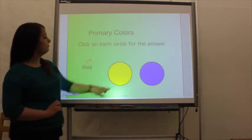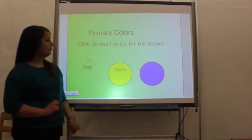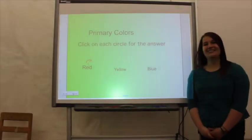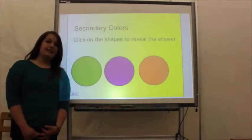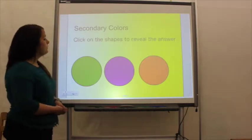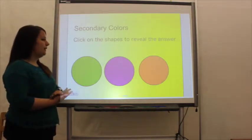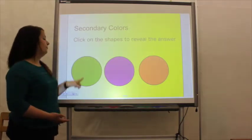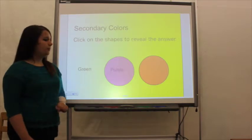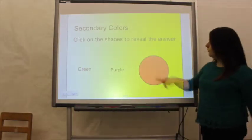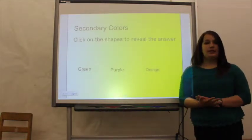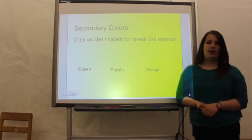We identify red, yellow, and blue as the primary colors. For the secondary colors, the students will also be invited to come up to the board to interact with it — same kind of process. They're going to learn spelling and learn which colors are the secondary colors: green, purple, and orange. At this point they should be introduced to the three primary and three secondary colors.